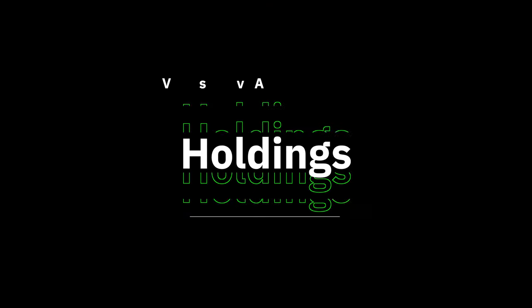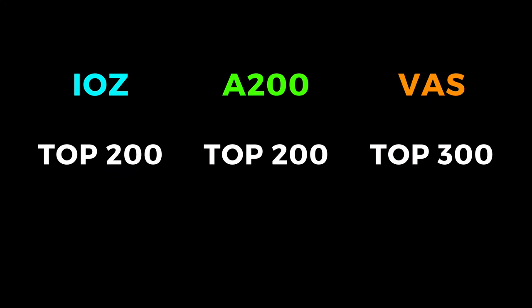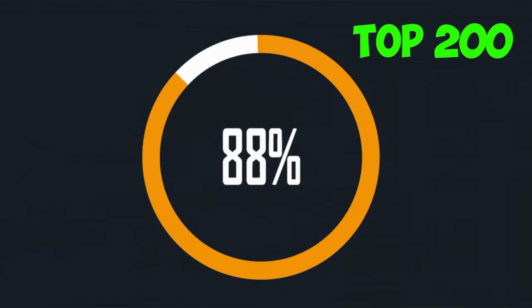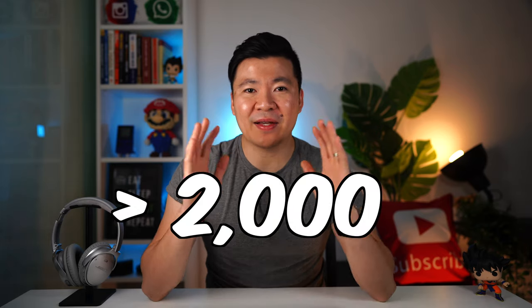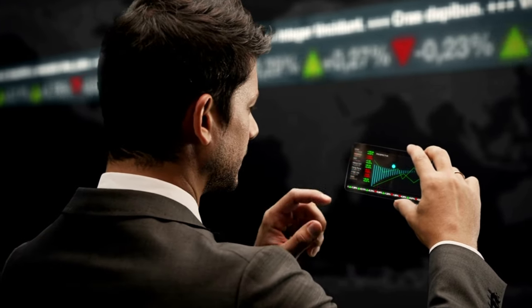The first category is what does each of these funds track and what companies do they hold? IOZ and A200 track the top 200 companies on the ASX, whereas VAS tracks the top 300 companies, which means it's a bit more diversified. The top 200 companies make up 88% of the entire Australian stock market and the top 300 makes up 93%. There are over 2,000 companies currently listed on the ASX. These small companies are much riskier for investors as the likelihood of them going bankrupt is much higher than the larger more established companies. So you are not really missing out by not investing in the remaining 10% of the ASX — you are actually reducing your risk by investing in the top 200 or 300 companies. This ensures that you are invested in the top companies at all times and any company that does not perform will be kicked out from the index and replaced with a better performing one.